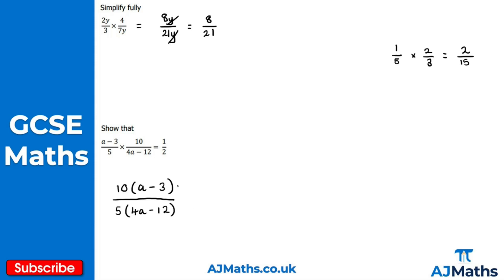How does this cancel to 1/2? We have 10 in the numerator and 5 in the denominator, so we can divide top and bottom by 5. This gives us 2 in the numerator, and the 5 cancels to 1 in the denominator. So we get 2(a-3)/(4a-12).